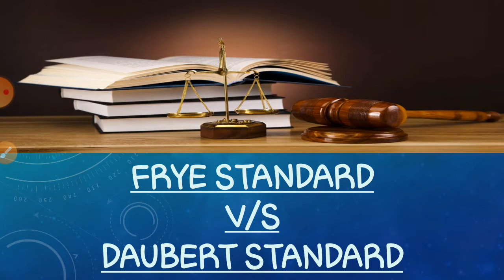Frye Standard and Daubert Standard کچھ standard rules ہیں جو کہ US کے rules ہیں. وہاں پہ جتنے بھی cases رہتے ہیں، کوئی بھی court case ہو، اس کو solve کرنے کے لیے جو standards کا use کیا جاتا ہے وہ آپ کی Frye Standard یا Daubert Standard ہوتے ہیں. اس کے علاوہ federal rules 702 والے rules بھی ہوتے ہیں، لیکن یہاں صرف Frye Standard اور Daubert Standard کے بارے میں discuss کریں گے.